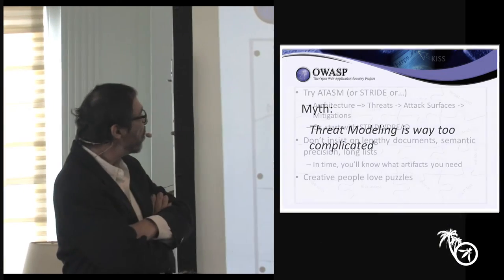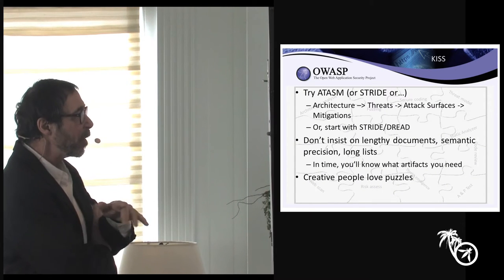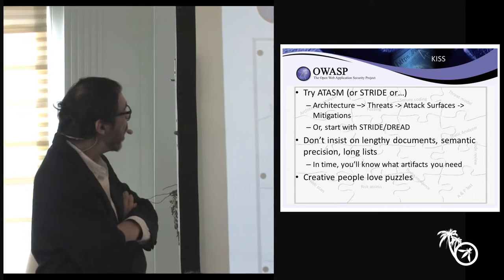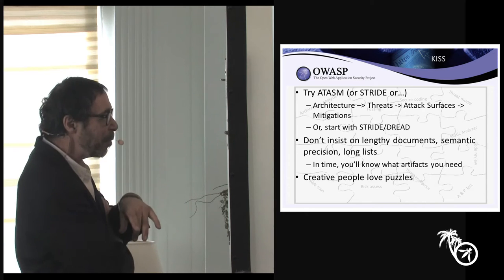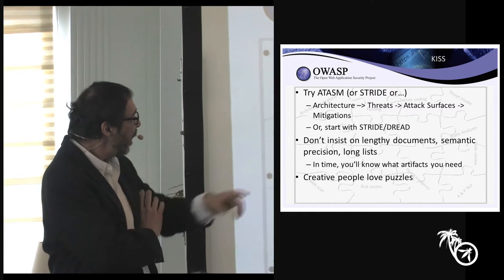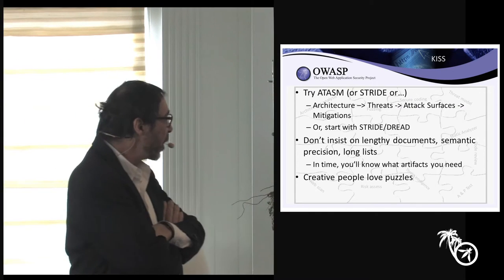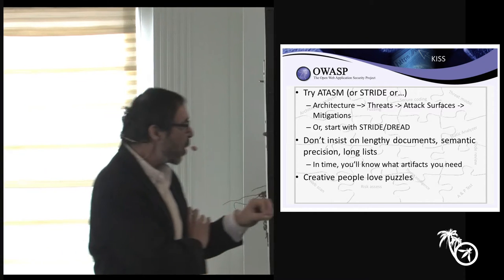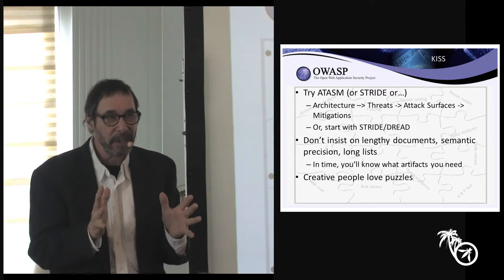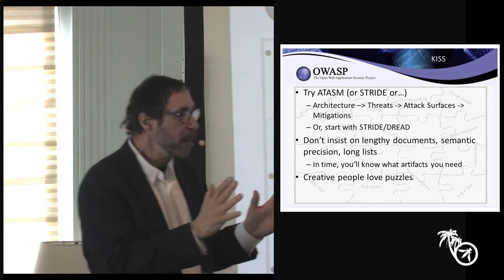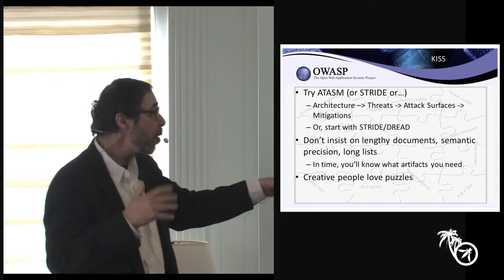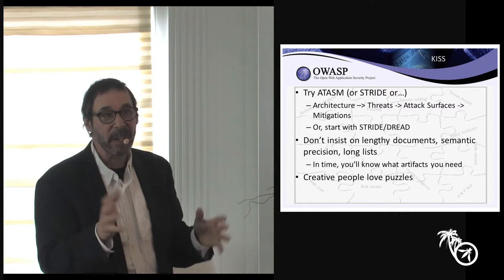Is it too impossible? Start with something simple. STRIDE has been out there for years, and that's a place to start. You can also try ATASM, which is in my book — it's really simple. Just get started. One of the big mistakes I see is people think 'this is important, therefore we have to build 250-page architectural documents.' Don't do that. You'll find out what you need once you get started.